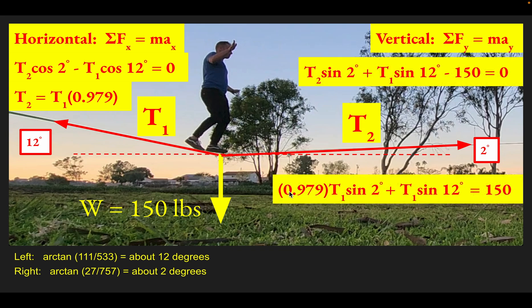I just put 0.979 T1 in for T2 in the first term here. Now our only unknown is T1. If we continue, you'll get T1 times 0.242 equals 150 pounds.